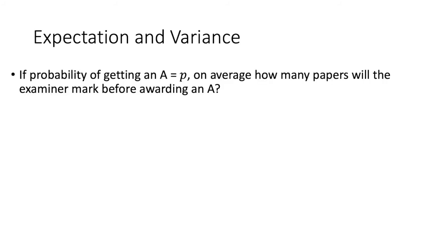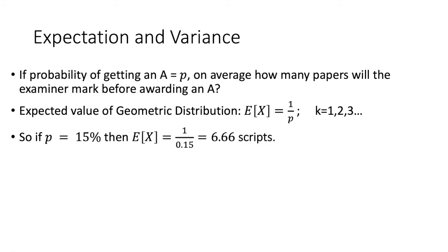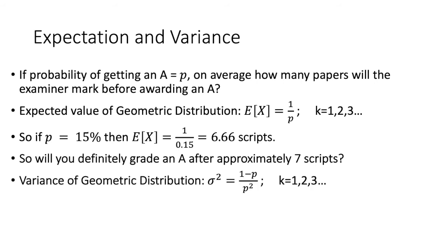So, another question you can ask is, on average, how many scripts an examiner will have to mark before he or she grades an A? The answer to that is the expected value. For a geometric distribution, the expected value is 1 over P, where P is the probability of success, and K begins at 1. So, if P equals 15%, then the expected value is 6.66 scripts. Now, the next question is, will you definitely grade an A after approximately grading 7 scripts? Not really, because one must expect some deviation from the mean or the expected value. So, the variance captures that deviation, and the formula for that is given on this slide. However, note that variance is a squared quantity, and we need to take its square root to bring it back into the original units of measurement.